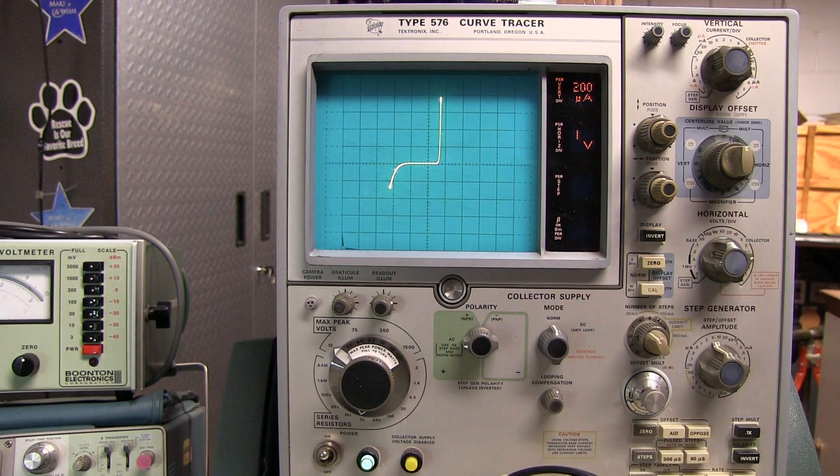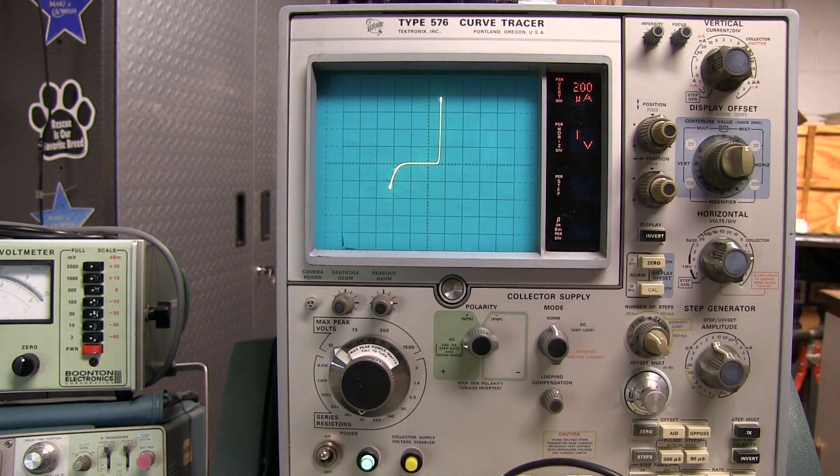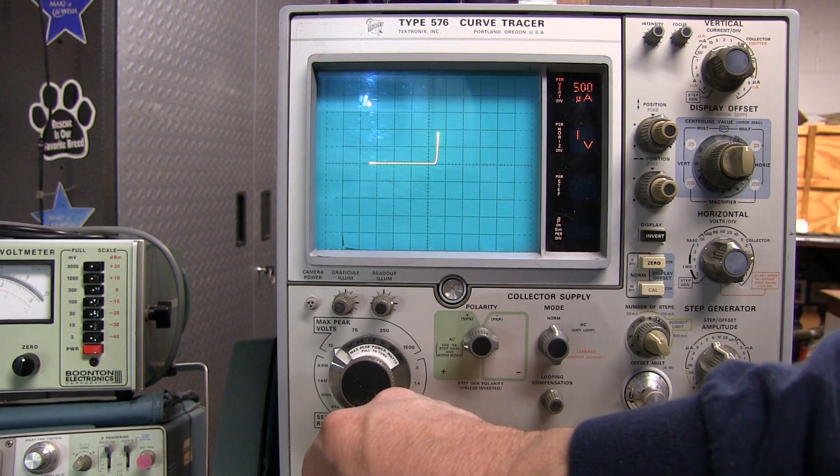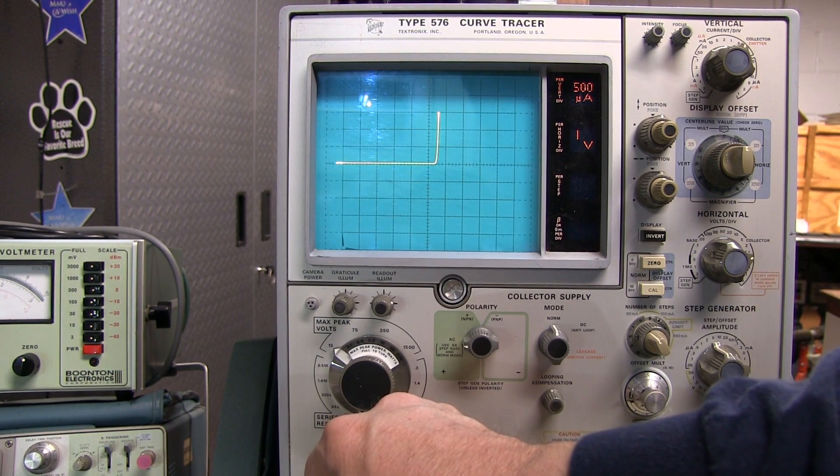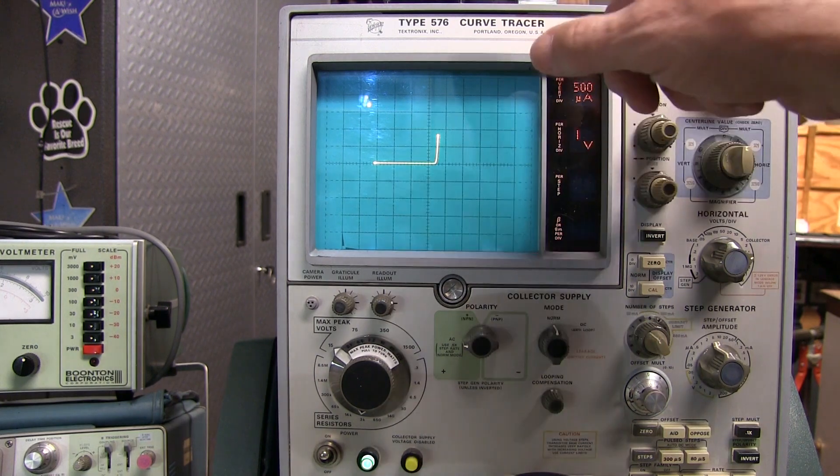Hopefully now armed with this information, if you've got access to a curve tracer, you can set it up to do the same thing. I hope you enjoyed this little tech tips video of how to use a dump truck as a wheelbarrow. Well, what I mean is how to use a curve tracer as a Huntron tracker or octopus curve tracer.